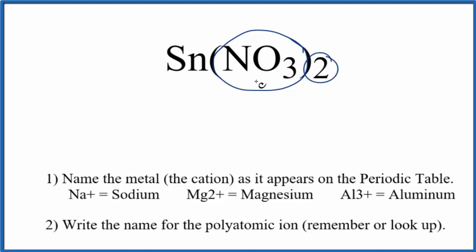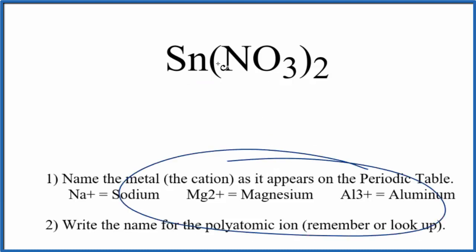We have two of these nitrate ions bonded to this tin atom here. Tin, that's a transition metal. So we have a metal, then we have this polyatomic ion, which is made up of non-metals. This is an ionic compound, so we can use these rules here to name the compound.